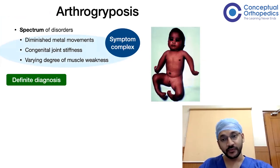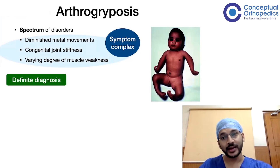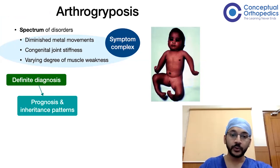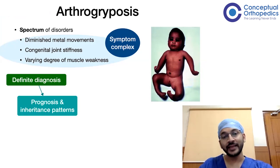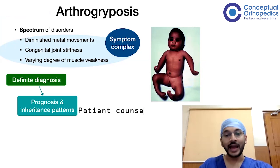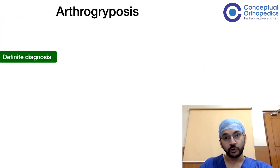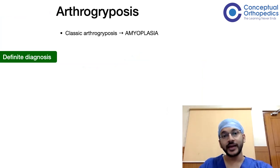This symptom complex covers a wide array of different diagnoses. To find out how a particular child or infant will do, we need to reach a definitive diagnosis, because it gives us an idea about the prognosis and inheritance patterns. Based on these, we can do patient and parent counseling. There are three to four different types of arthrogryposis.